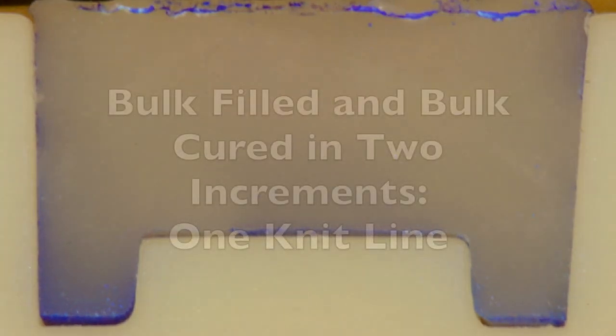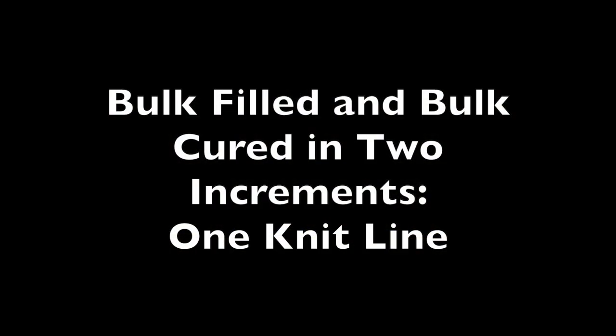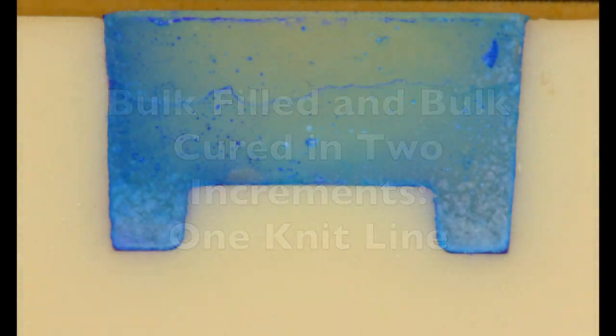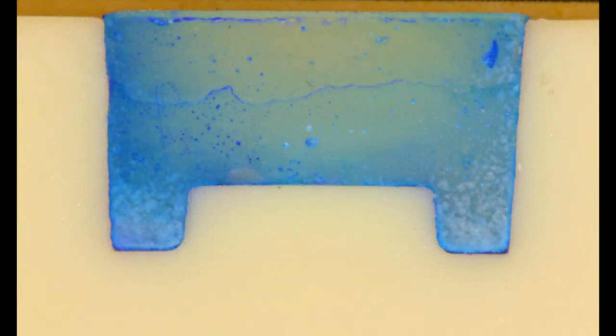Now I'd like to point out that just because the composite says it's a bulk fill material doesn't mean you can fill all cavities in just one increment. In order to obey the instructions for use, you may still have to fill the cavity in two increments, and this may introduce a knit line.